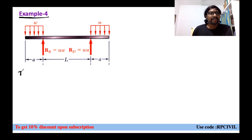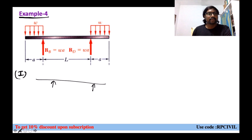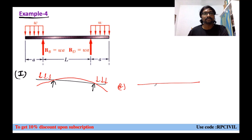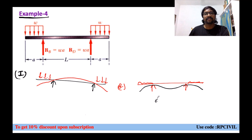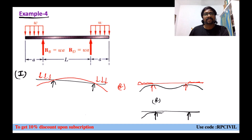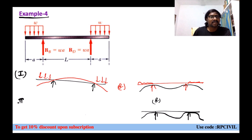Another example: overhanging portion with UDL on the overhang only. Step one - visual inspection. There are many possibilities. If loads are acting downward on the overhang portion, deflections on the overhang will be downward. This is one way of drawing. A second way of drawing is also possible, and yet another possibility exists without any rotations.